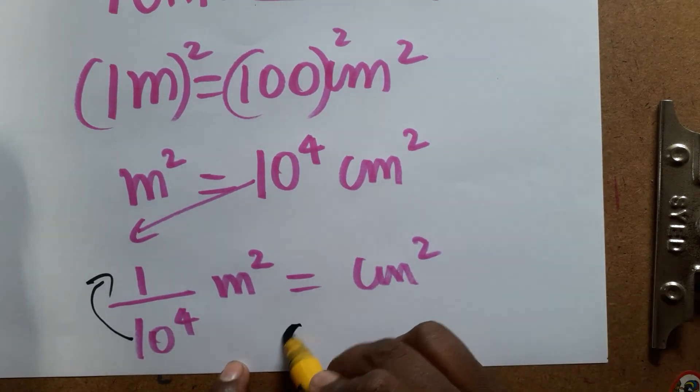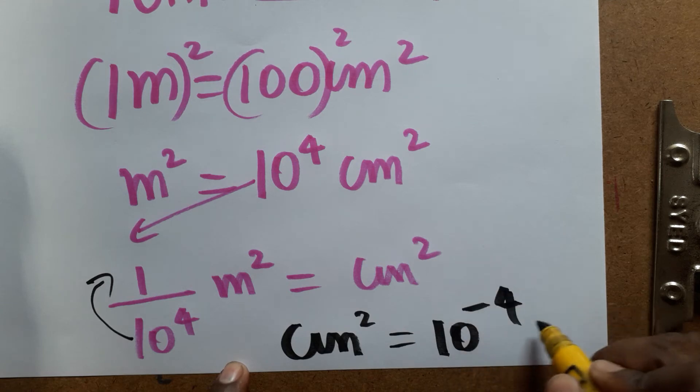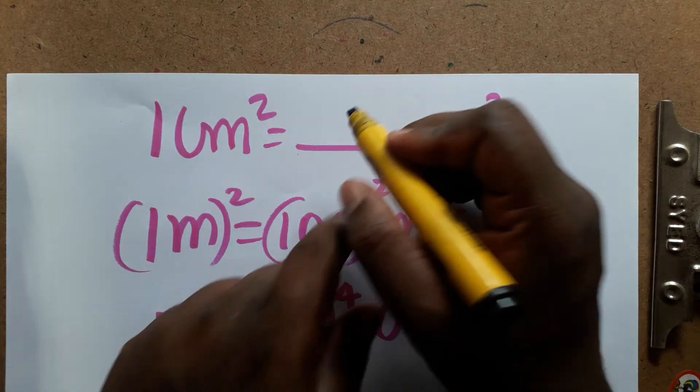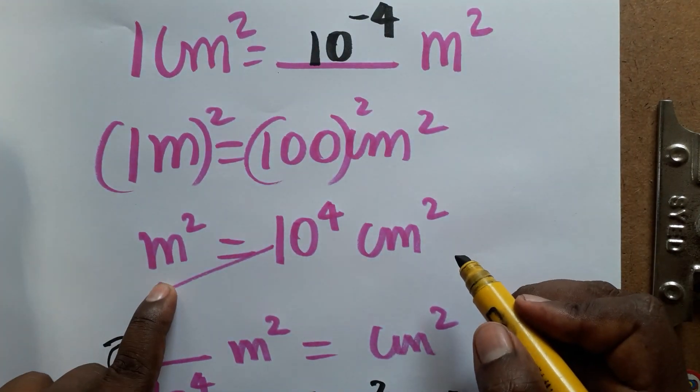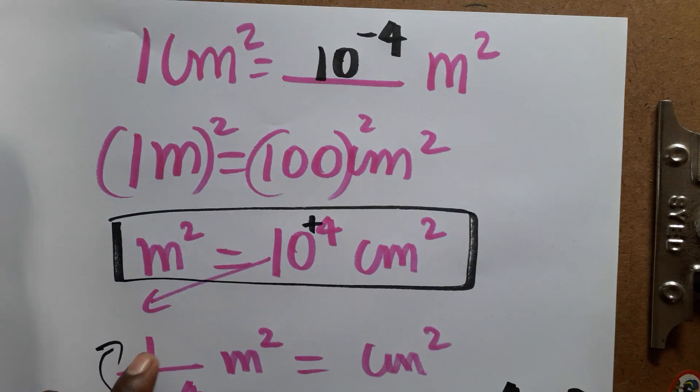So we'll get: centimeter squared is equal to 10 to the power of minus 4 meter squared. So 1 centimeter squared is 10 to the power of minus 4 meter squared. And 1 meter squared is equal to 10 to the power of 4 centimeter squared.